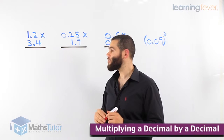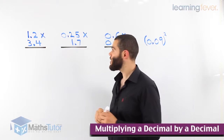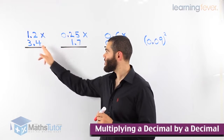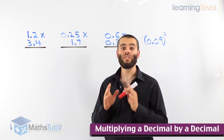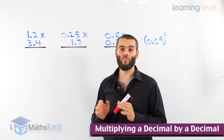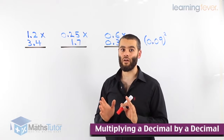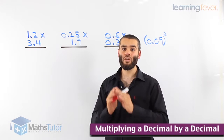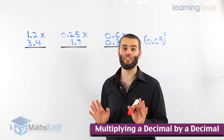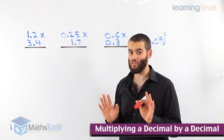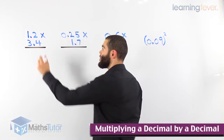1.2 times 3.4. We notice that there is a decimal times a decimal. What we do is we disregard the points just for now. So we do a normal multiplication, pretending the points don't exist just for now. Let's do it.